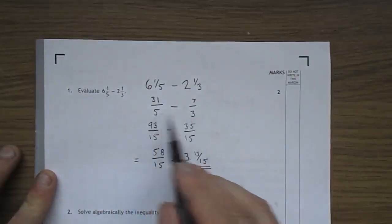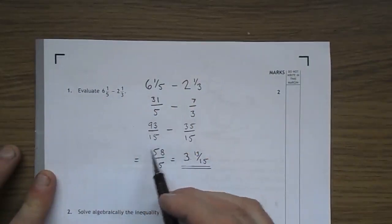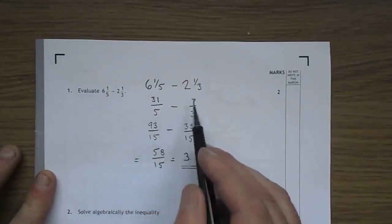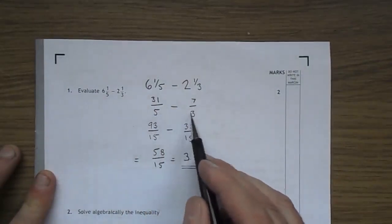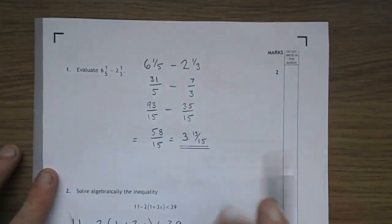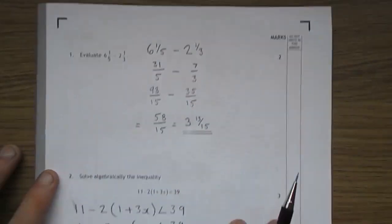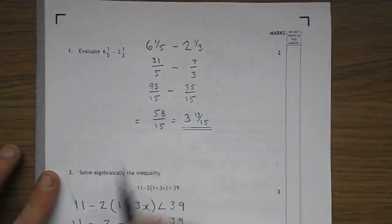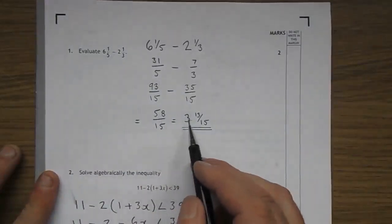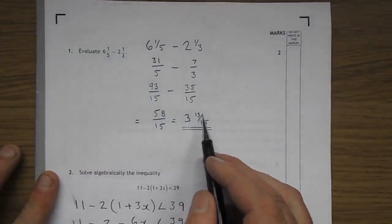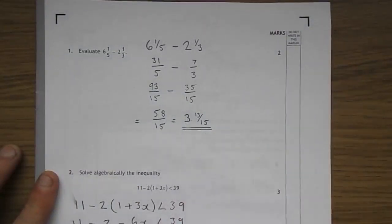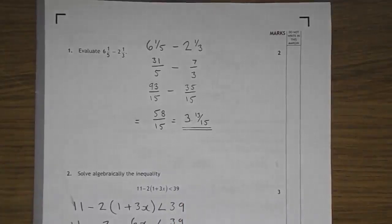Make them both fifteens. Three fives, 15. Three thirty ones, 93. Take away five sevens are 35. Five threes, 15. Ninety-three take 35. I'm sure you could do that in your head. Fifty-eight over fifteen. Three fifteens are 45 with a remainder of 13 to make it 58. So it's three and thirteen fifteens.